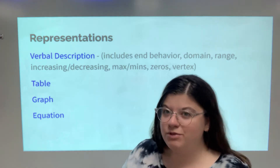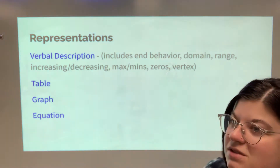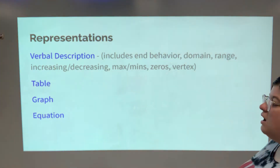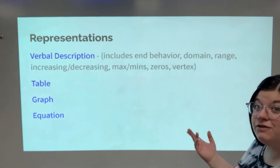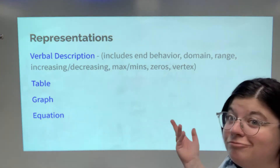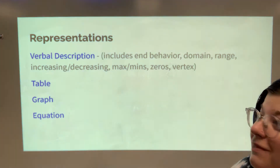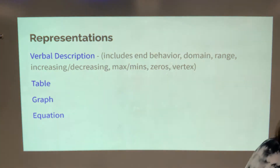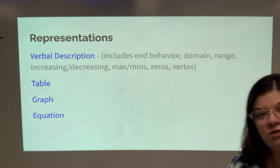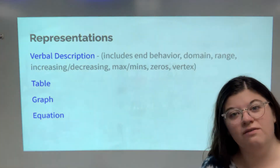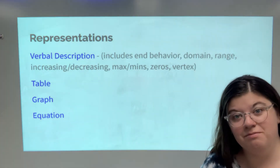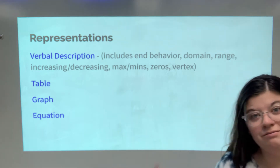Graphs — a literal picture of the function — and equations. For example, f(x) equals absolute value of x plus three. So those are your four representations: verbal description, table of values, graph, and equation.